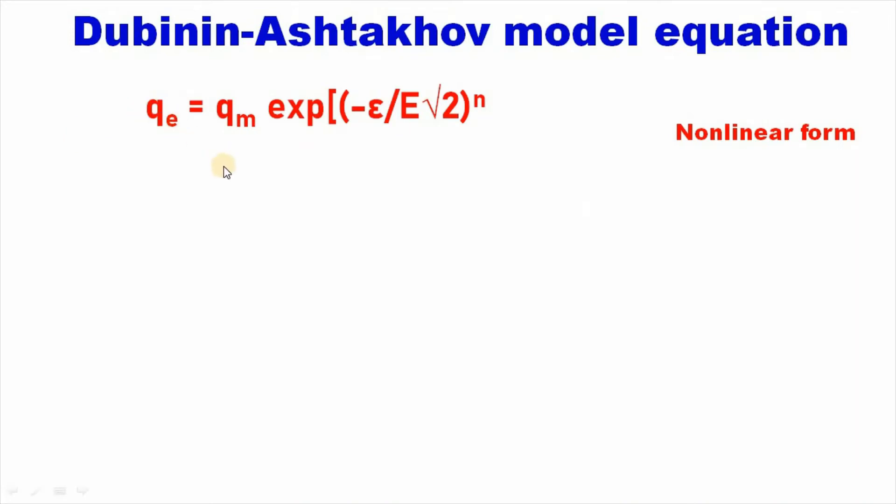The non-linear form of Dubinin-Ashtakhov model equation can be written as q equal to qm exponential minus epsilon divided by E root over 2 to the power n, where epsilon equal to RT ln(1 plus 1 by C) equal to delta G.